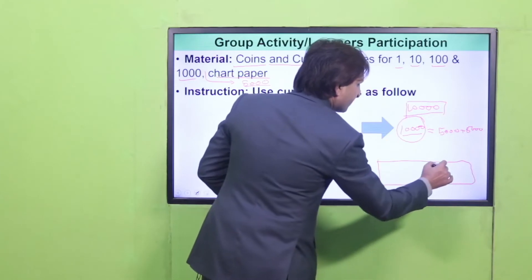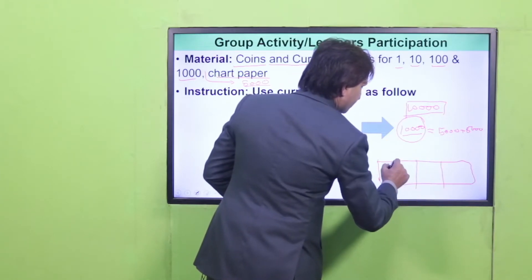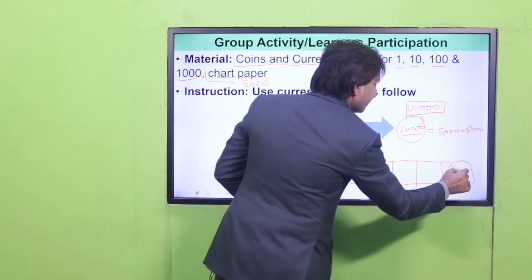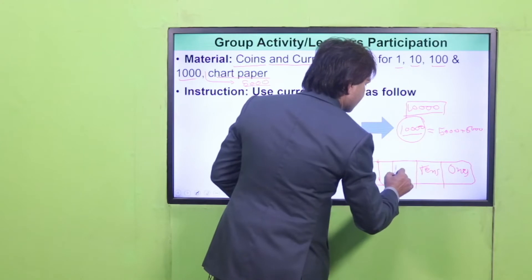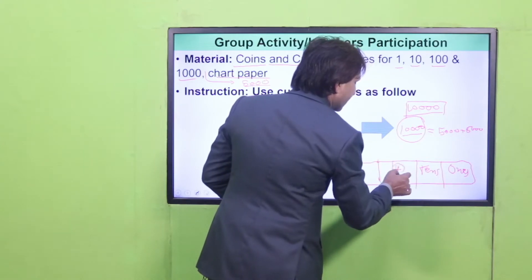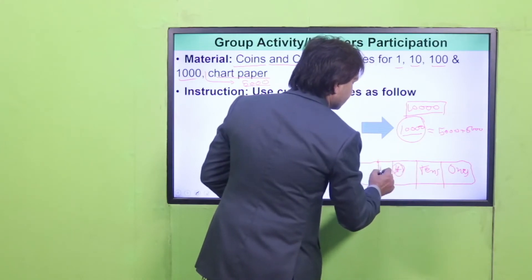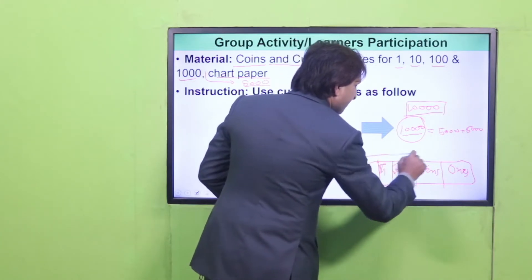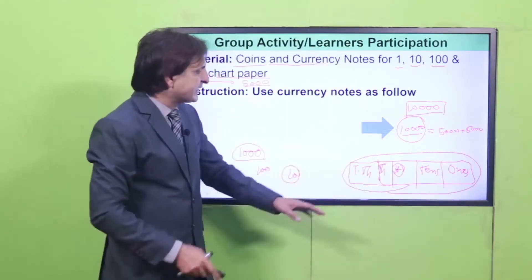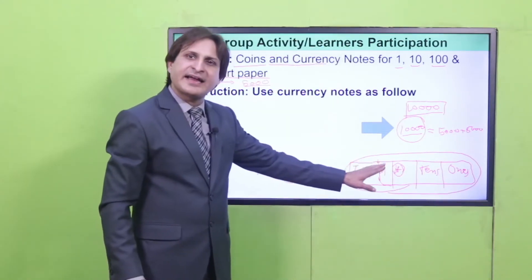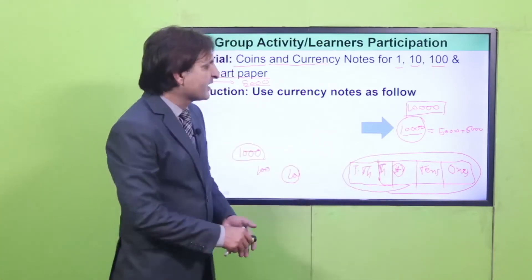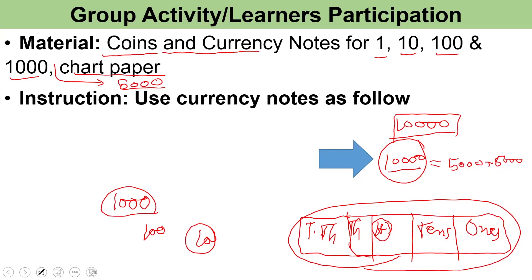On the place value chart: ones (O), tens (T), hundreds (H), thousands (Th), and ten thousands (T.Th). This complete chart goes up to ten thousand. Ten thousand is the smallest five-digit number, and we can also identify the largest five-digit number from this chart.